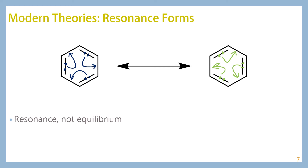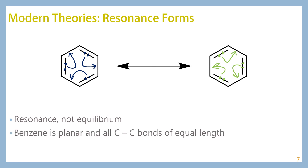Remember, this is resonance — these structures are not in equilibrium with each other. Neither one is the true form of benzene exactly, because benzene is not alternating double and single bonds. Instead, we have six equivalent bonds that are like 1.5 bonds. Also keep in mind that benzene is planar and all of the carbon-carbon bonds are of equal length. Every carbon in benzene is sp2 hybridized, so benzene itself is completely flat, and the hydrogens attached to each carbon are also in the same plane.